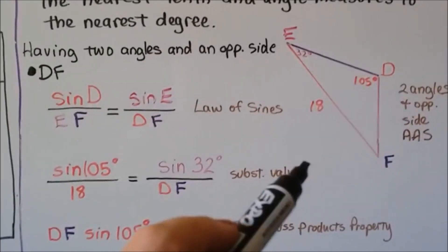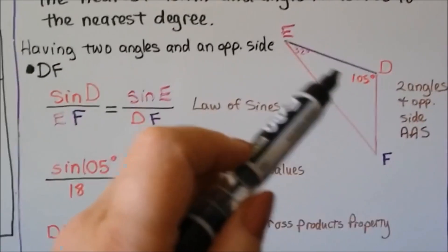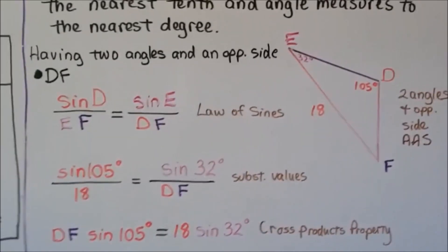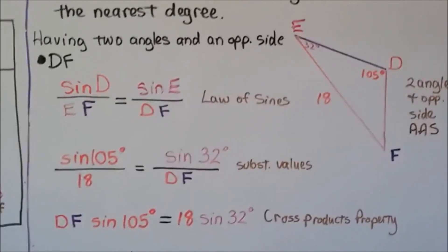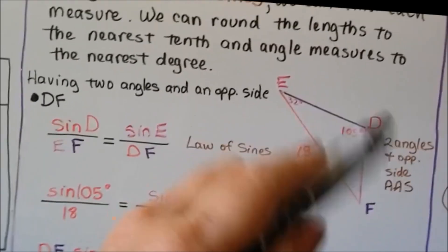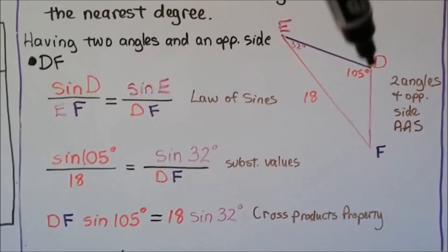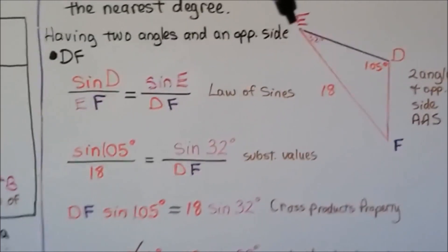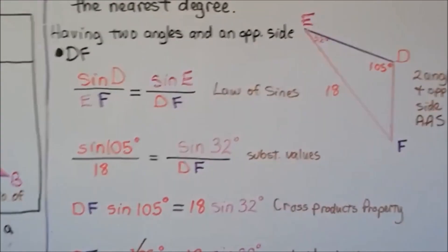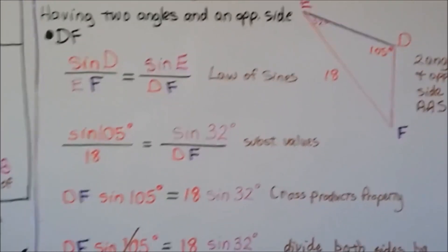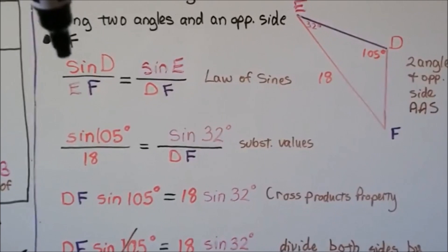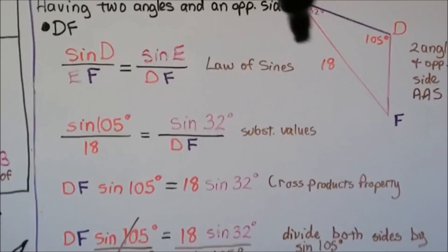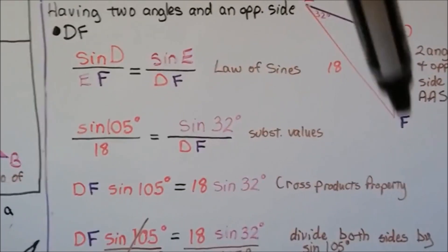Having two angles and an opposite side, here we have an angle that's 105 degrees, an angle that's 32 degrees, and a side that's 18. So that's AAS, two angles and an opposite side. If we want to find DF, we can do the sine of D over EF equals the sine of E over DF. That's the law of sines. We substitute in the values, we've got the sine of 105 degrees over 18 equals the sine of 32 degrees over DF.